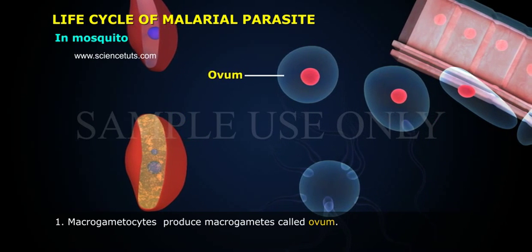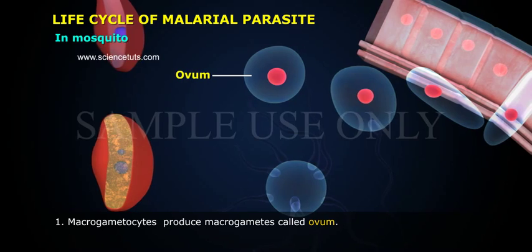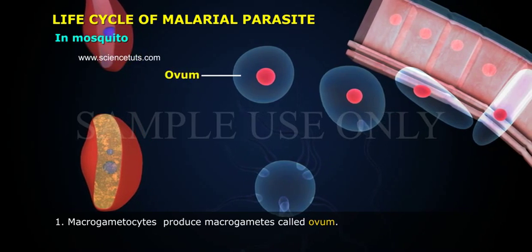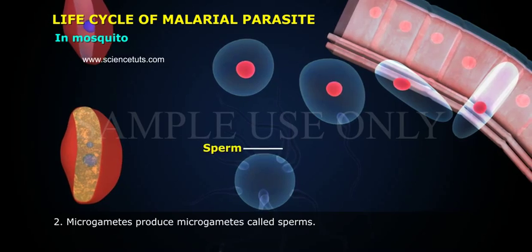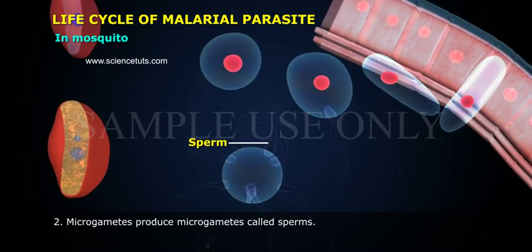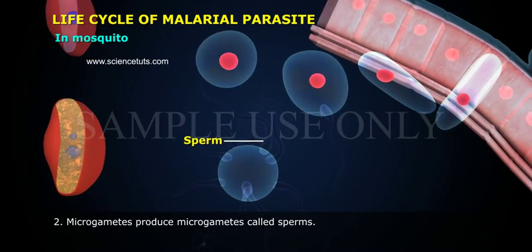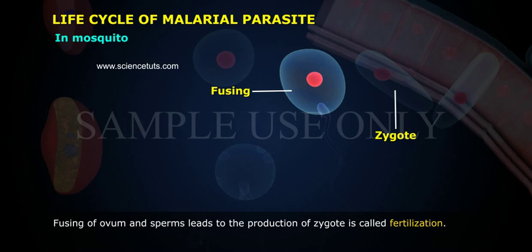Macrogametocytes produce macrogametes called ovum. Microgametocytes produce microgametes called sperms. The fusing of ovum and sperms leads to the production of a zygote, which is called fertilization.